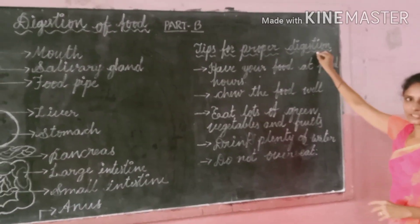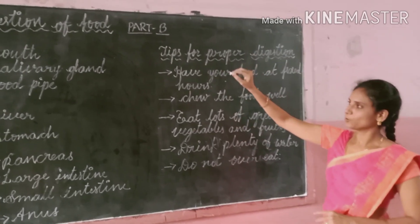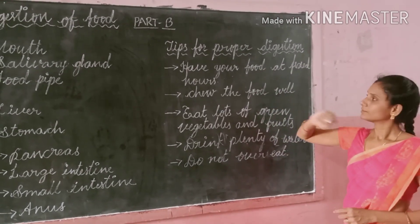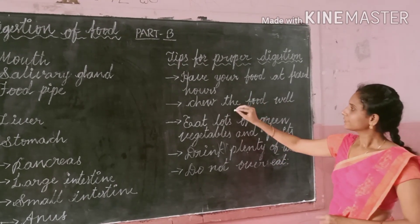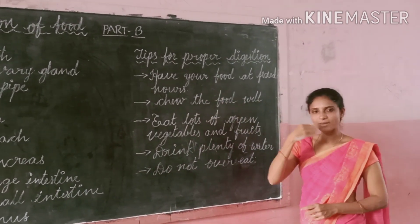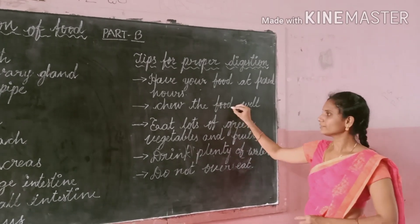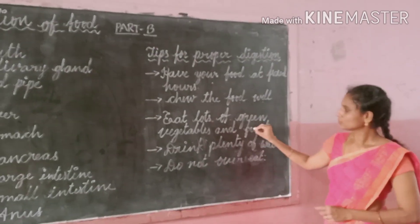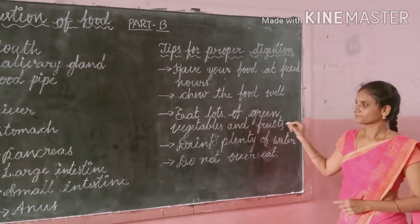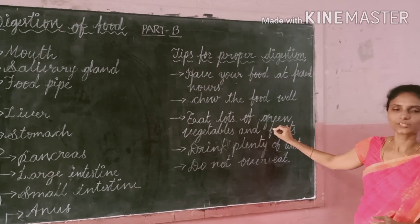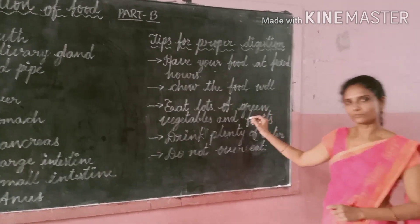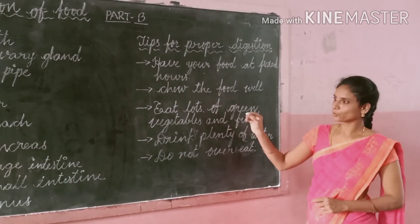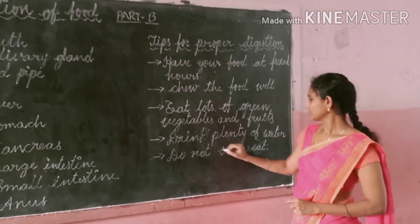Tips for proper digestion: We should have our food at fixed hours — we should eat at the same time daily. We must chew the food well before swallowing. We should eat lots of green vegetables and fruits, because they contain roughage, which helps in proper functioning of the digestive system. We must drink plenty of water for proper digestion. And we should not overeat.